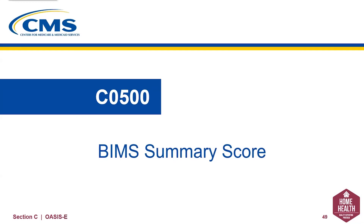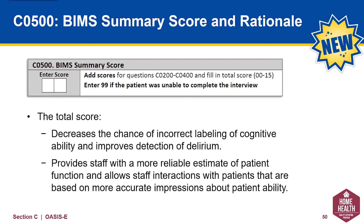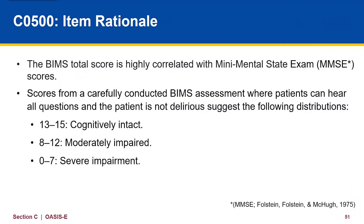Now let's wrap up the BIMS by looking at C0500, the BIMS Summary Score. This item identifies the total score for all questions asked in C0200 through C0400. The total score decreases the chance of incorrect labeling of cognitive ability and improves the detection of delirium. It provides staff with a more reliable estimate of a patient's function, allowing interactions based on a more accurate impression of the patient's ability.